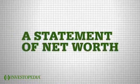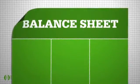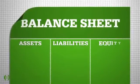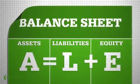A balance sheet is a statement of net worth. It's broken up into three sections: assets, liabilities, and equity. A equals L plus E.